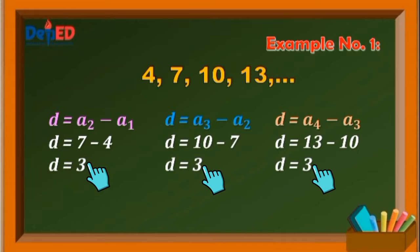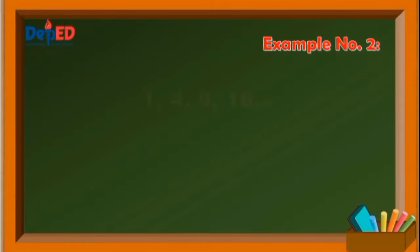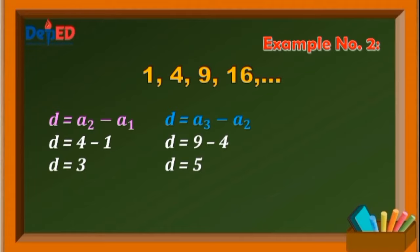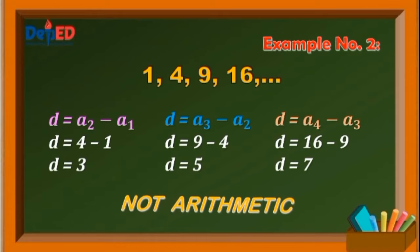This means that this sequence is an arithmetic sequence. Now, let us check whether the second example is arithmetic or not. Check if it has a common difference. Get the difference between the second term and the first term. So 4 minus 1 is equal to 3. We find out that it doesn't have a common difference. And so, we say that this sequence is not an arithmetic sequence.